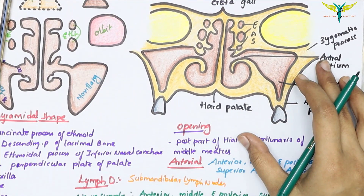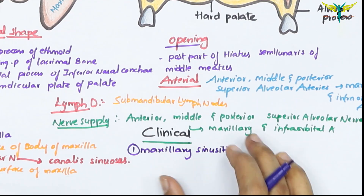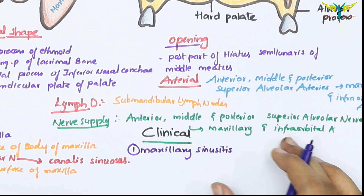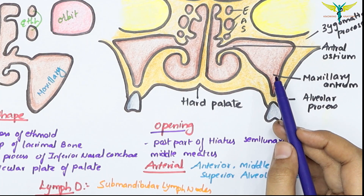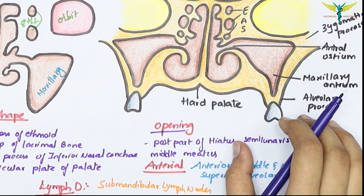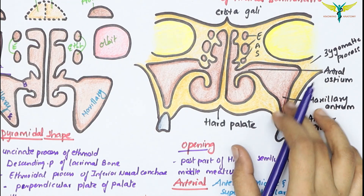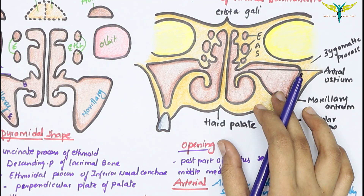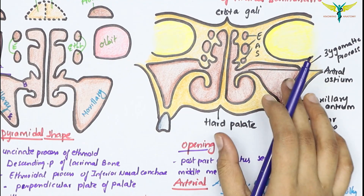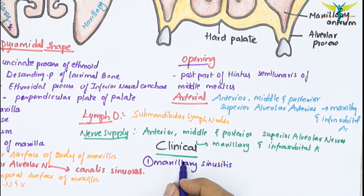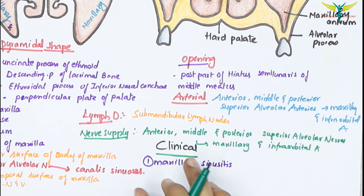Coming to the clinical correlation of the maxillary air sinuses — that is maxillary sinusitis — the maxillary sinus is most commonly infected among all sinusitis due to infection that can reach the sinus from the infected nose (viral rhinitis), caries in the upper premolar and molar teeth, and sometimes infected frontal sinuses and ethmoidal sinuses. The maxillary sinus, being the most dependent part, acts as a secondary reservoir for pus from the frontal air sinus through the frontal nasal duct and the hiatus semilunaris. The pain of maxillary sinusitis is referred to the upper teeth and the infraorbital skin due to common innervation by the maxillary nerve.